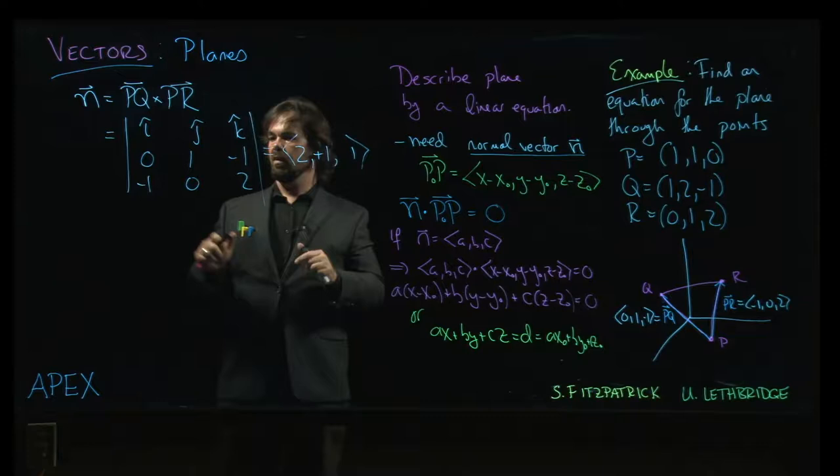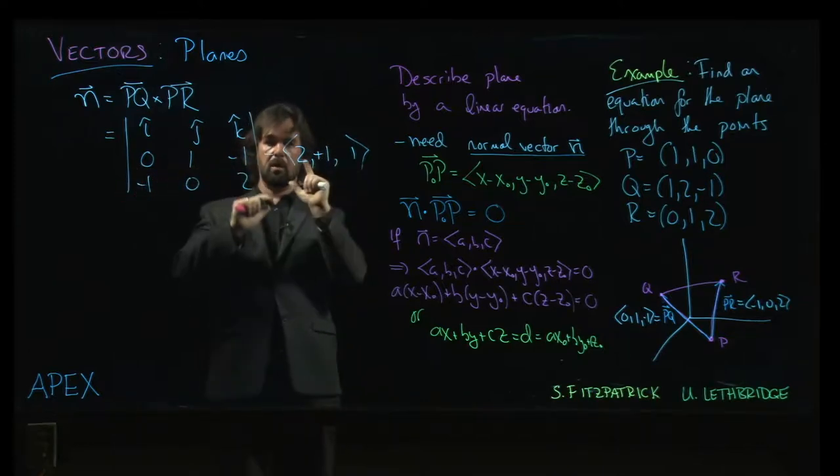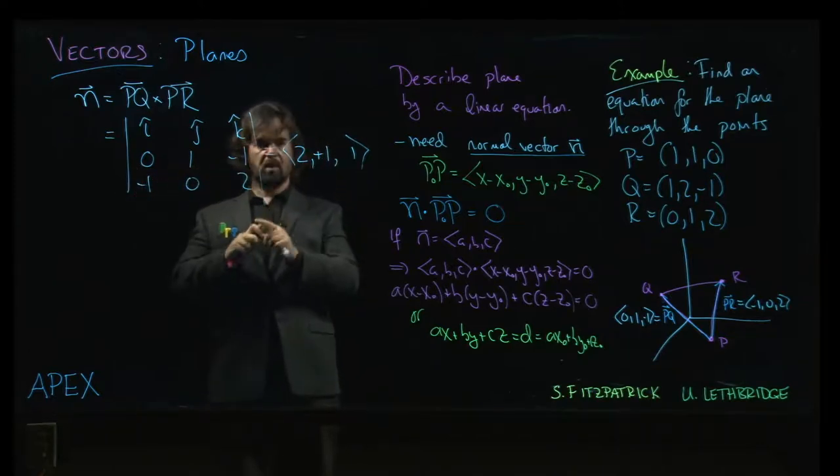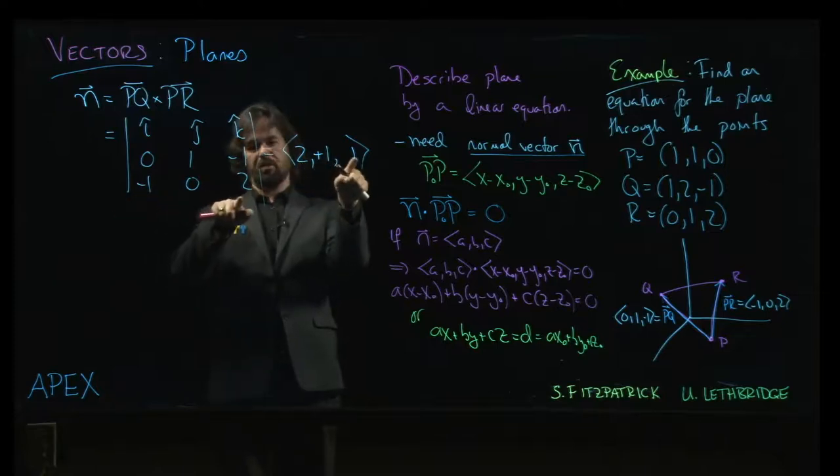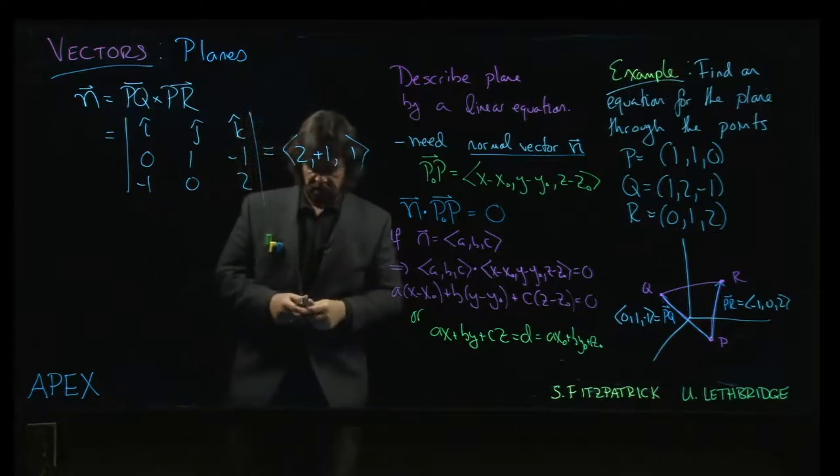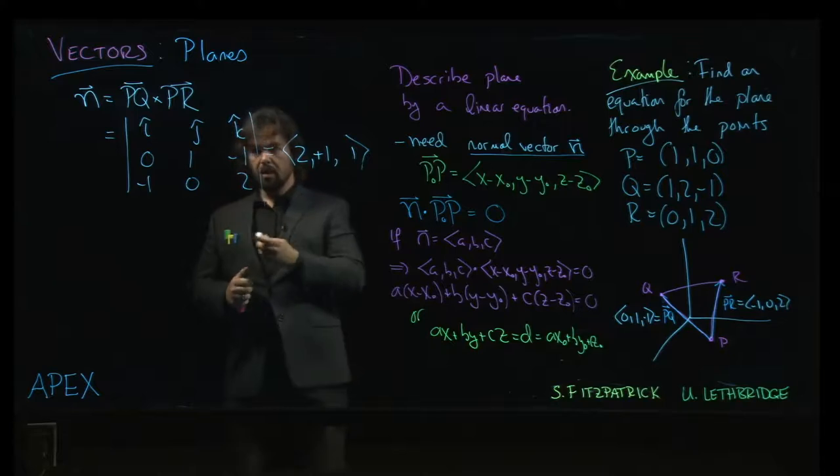So it's going to be zero plus one minus one, zero for the first dot product, minus two plus zero plus two, zero for the second dot product. So now we know we have a normal vector.